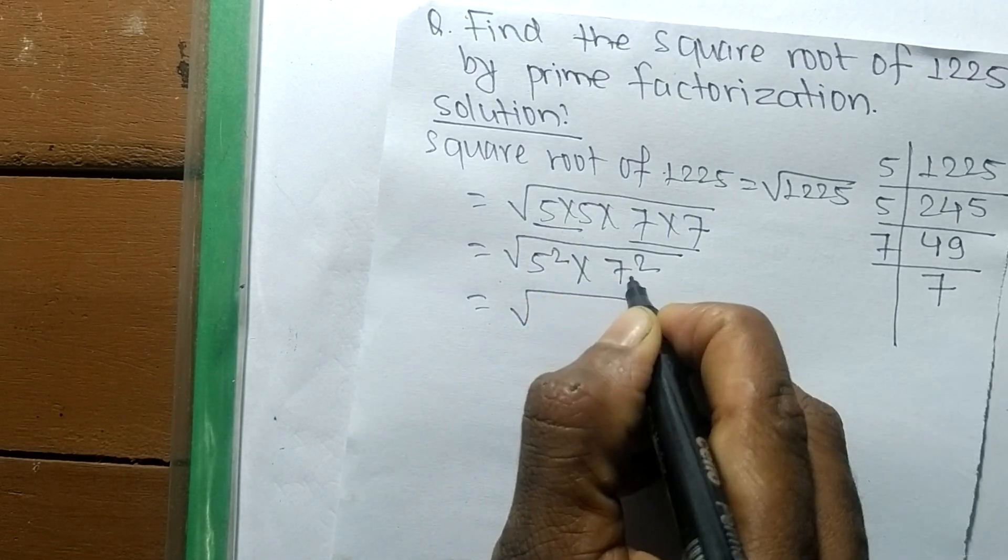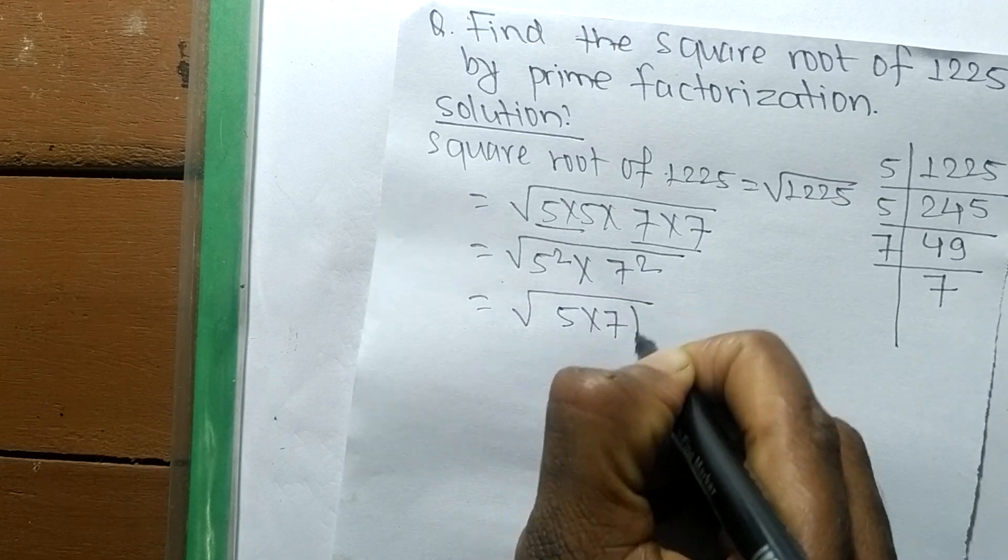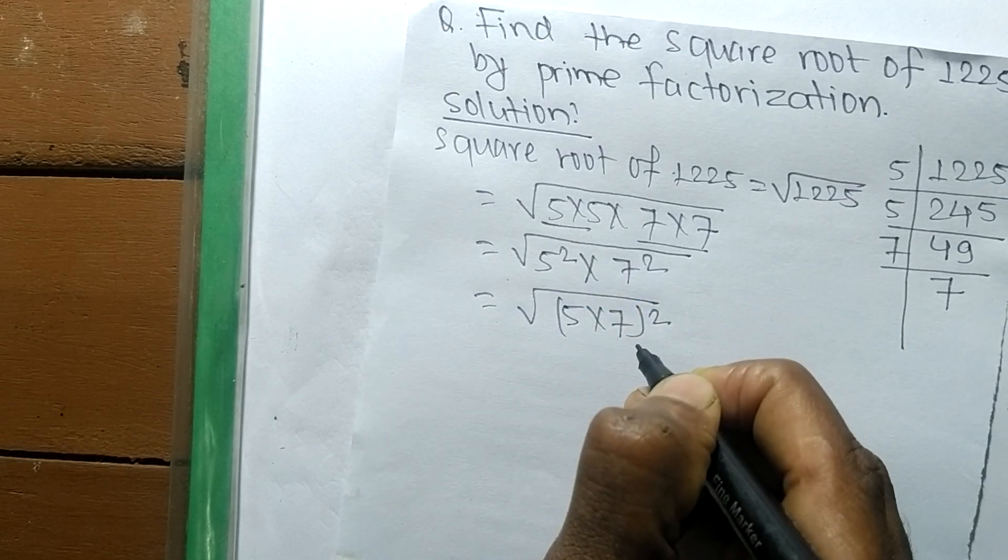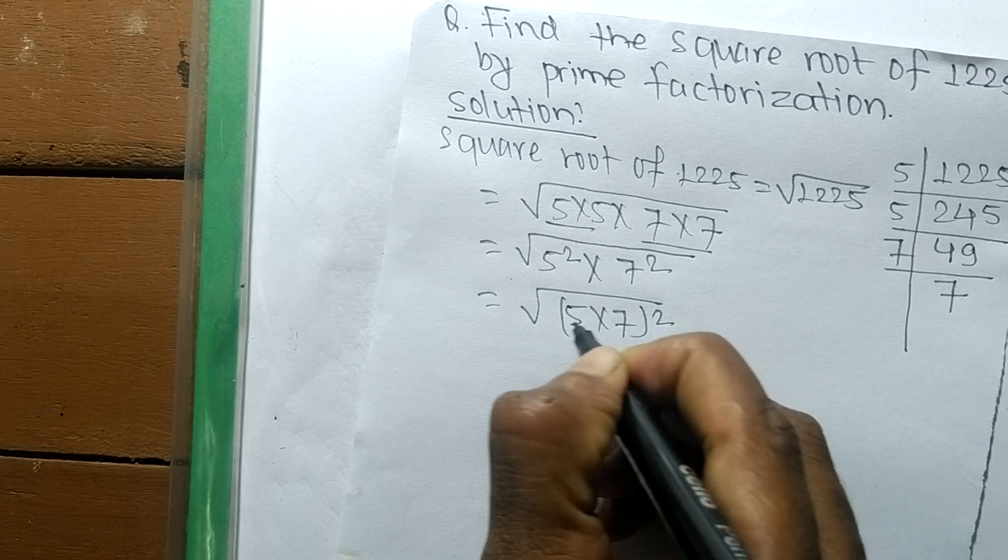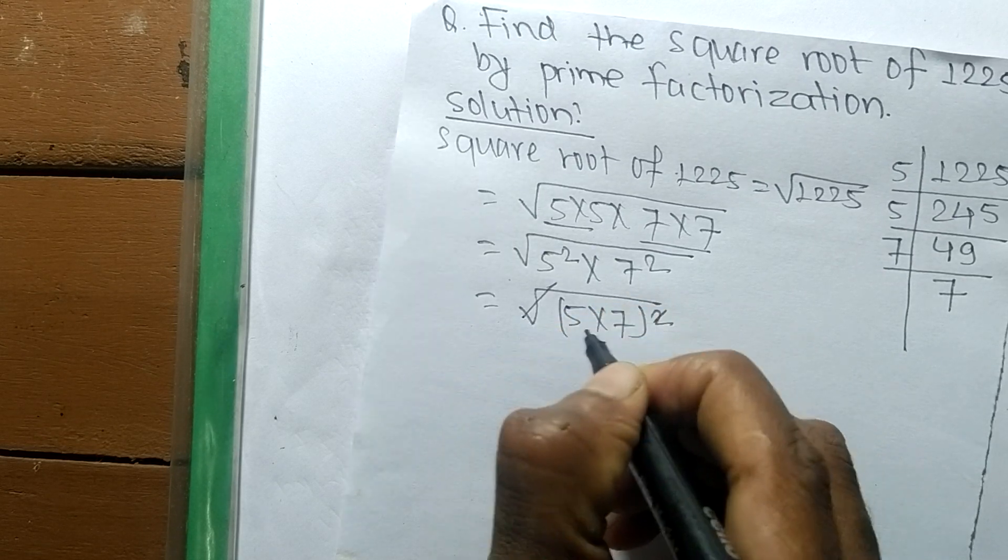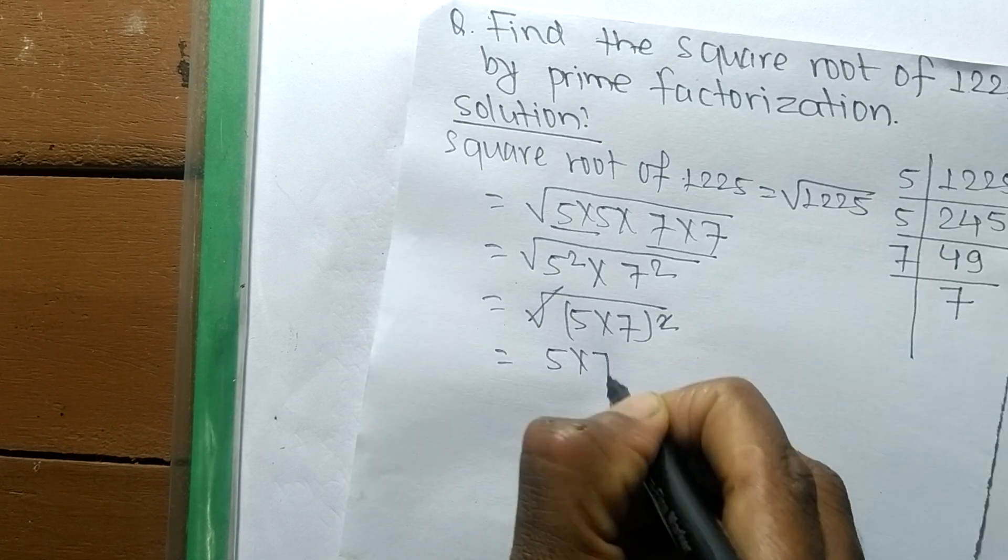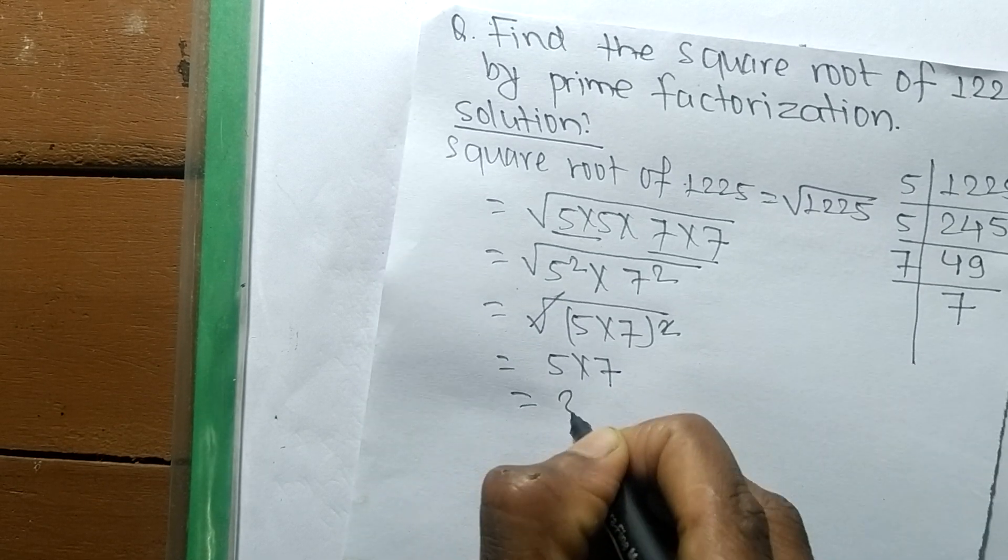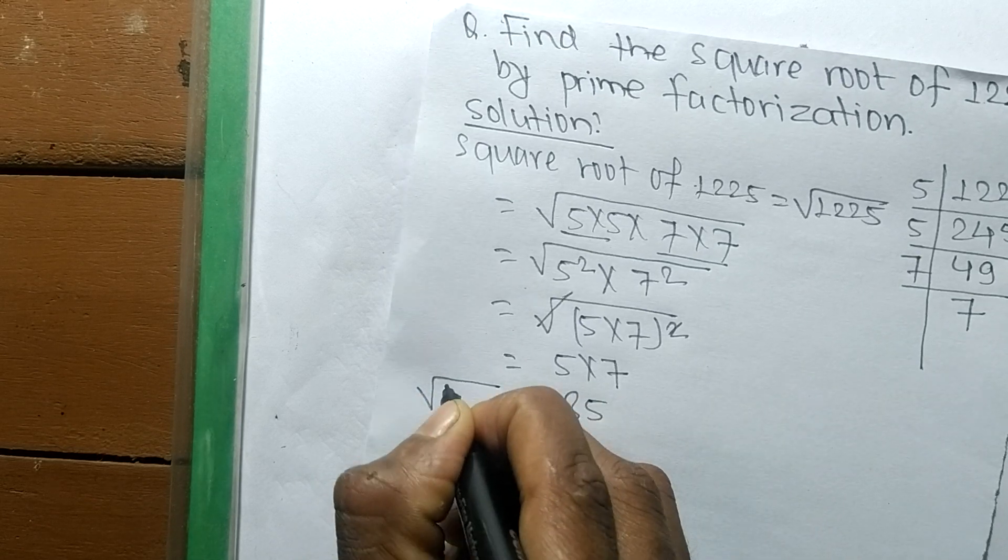So these both numbers contain a square, so we can write it as 5 times 7 whole squared. We took here the square as a common from both these numbers. So now a square and a square root cancel each other, so the remaining number is 5 times 7.